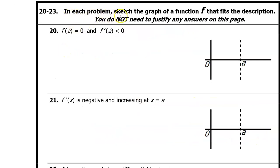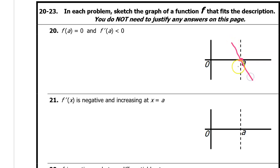In each problem below, sketch the graph of a function f that fits the description. Number 20: f at a equals 0, so the value of the function at a is zero — just put a dot there. f prime is less than zero, meaning f prime is negative, meaning the slope is negative. So simply draw a line going downhill through that point.